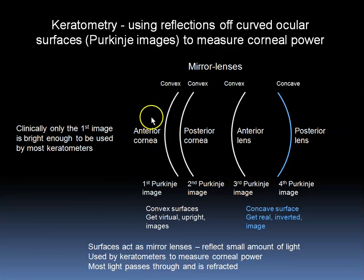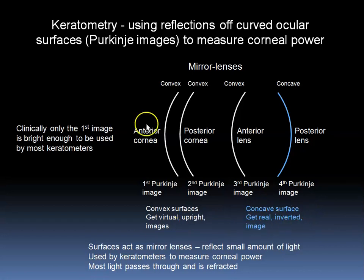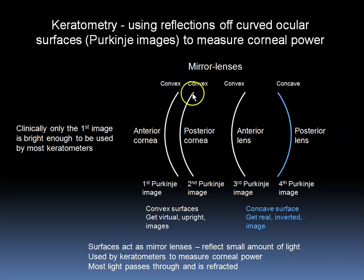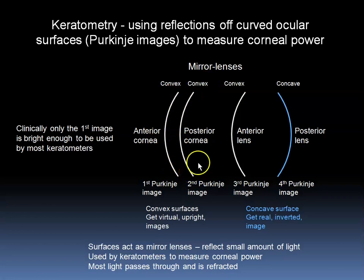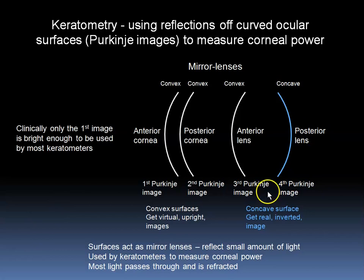Convex mirror lenses give virtual upright images, which will be shown later in the slide series. Concave mirror lenses give real inverted images. At optical interfaces where the index of refraction changes, we have a mirror lens component. Shown are the anterior and posterior surfaces of the cornea, that both form convex mirror lenses with respect to the incoming light. The front surface of the crystalline lens is also a convex mirror lens.